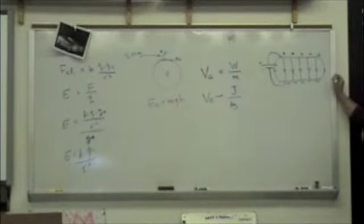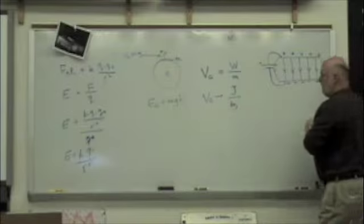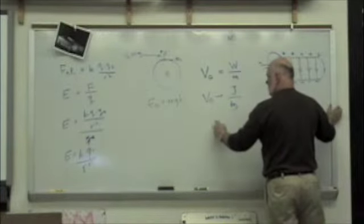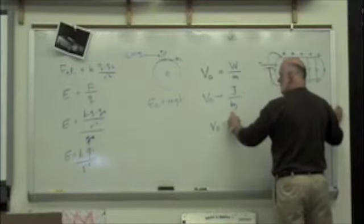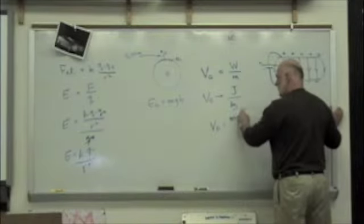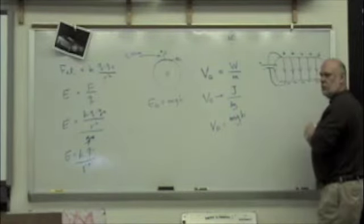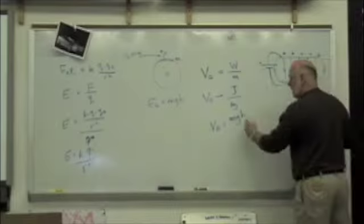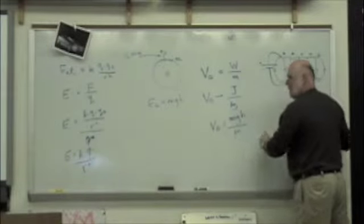The gravitational potential difference would be the mass of the object times the gravitational field strength times how far it moved between the earth and that point divided by the mass, right?